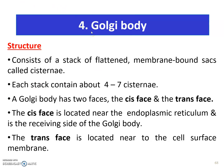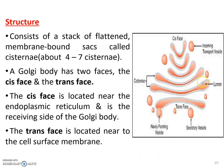The fourth organelle is the Golgi body. It also has a stack of flattened membrane-bound sacs called cisternae; each stack contains about four to seven cisternae. Golgi body has two faces: the CIS face and the TRANS face, depending on location. The CIS face is located near the endoplasmic reticulum and is the receiving site, while the TRANS face is located near the cell surface membrane. In the diagram, the Golgi body looks similar to the RER — a flattened sac — with the CIS face facing the RER and the TRANS face facing the cell membrane.